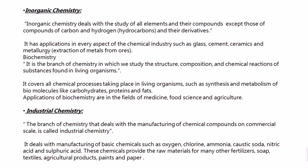The next branch is industrial chemistry — the branch that deals with the manufacturing of chemical compounds on a commercial scale. Unlike lab experiments done on a small scale, industrial chemistry performs the same processes on a large scale. It deals with manufacturing basic chemicals such as oxygen, chlorine, ammonia, caustic soda, nitric acid, and sulfuric acid. These provide raw materials for fertilizers, soaps, textiles, agricultural products, paints, paper, and detergents.